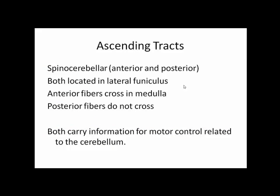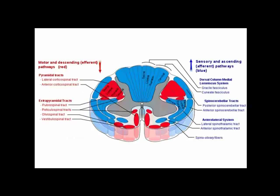The last set of ascending tracts are the spinal cerebellars. There are two, both located in the lateral funiculus — the anterior and the posterior. The anterior fibers cross in the medulla oblongata, while the posterior fibers do not cross and go up the same side. Both tracts carry information for motor control related to the cerebellum, including fine motor movement and proprioception.